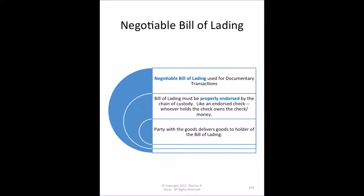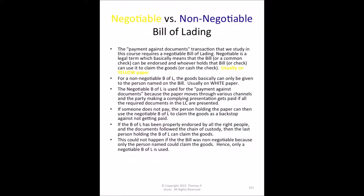If you write a check to Bill Smith for fifty dollars and sign it, Bill turns the check over, endorses the back, and presents it to the bank for payment. If he does not endorse the check, the bank will not pay him. When he endorses it, the check becomes a negotiable document — the bank has an obligation to pay the presenter the fifty dollars. The bill of lading works similarly: as it moves through the chain of custody and parties endorse it, it becomes a negotiable bill of lading, meaning whoever holds it can claim the goods.